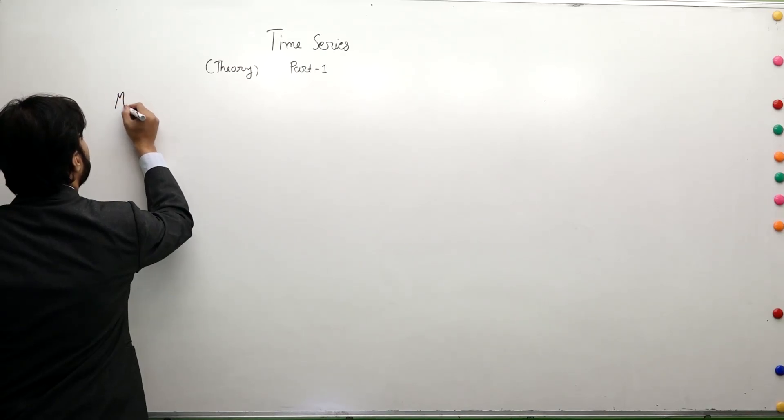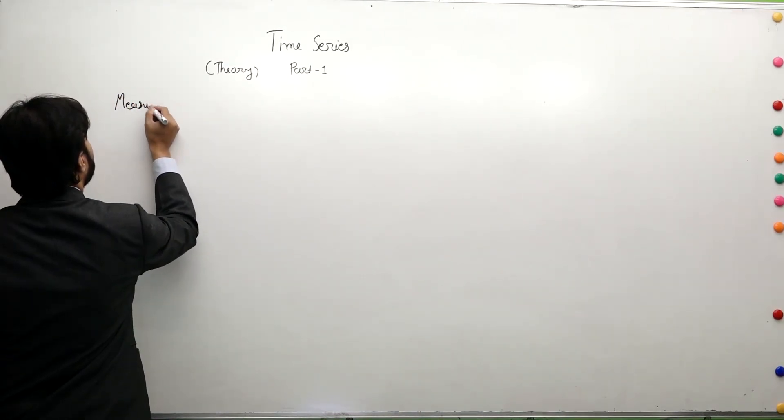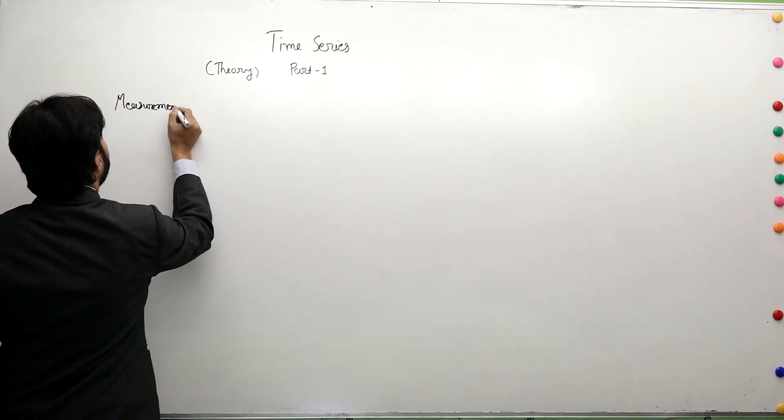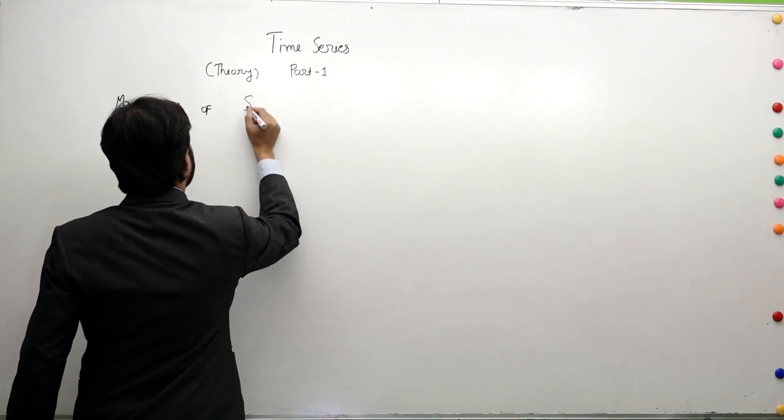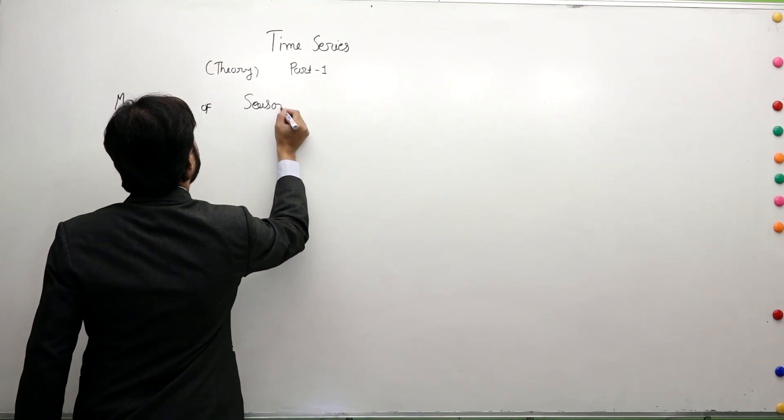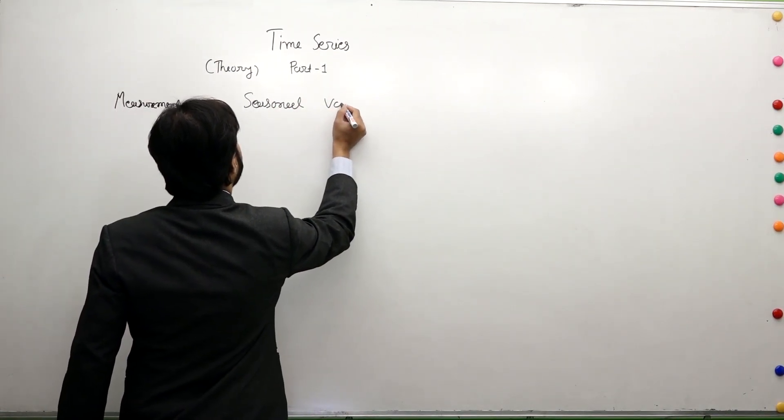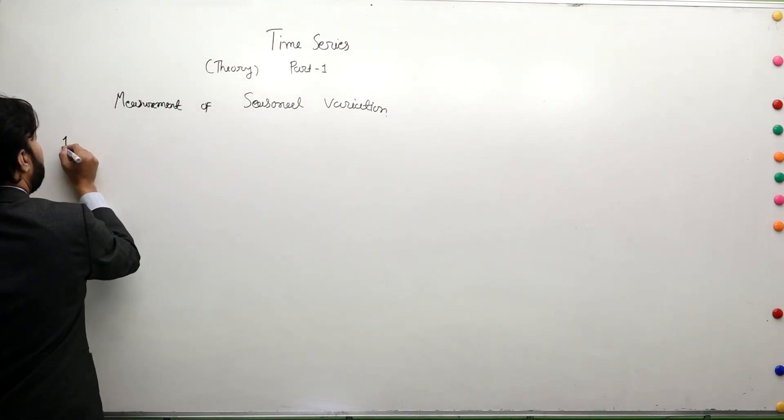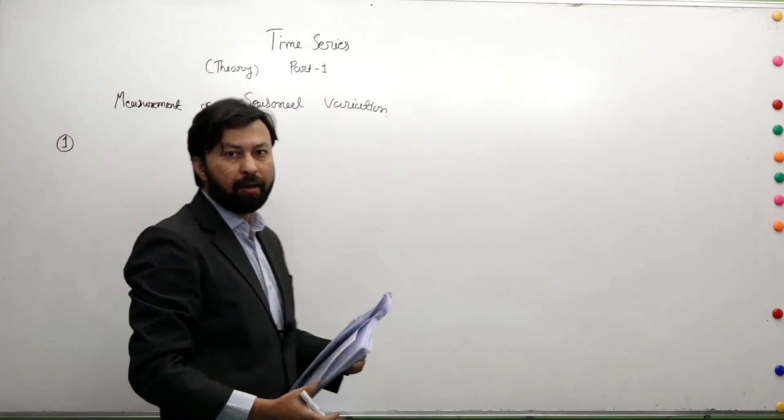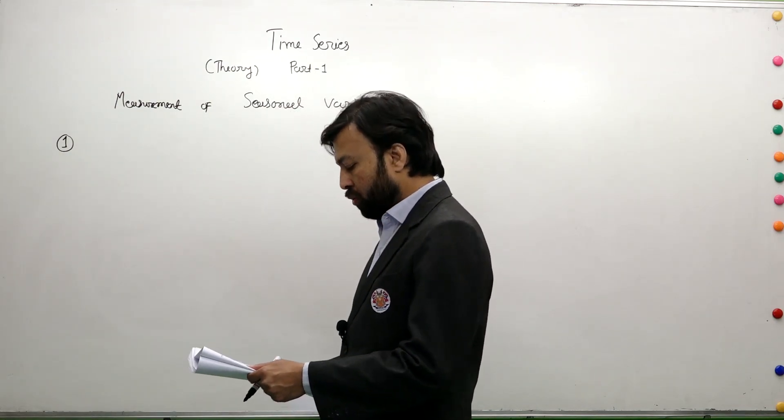Measurement of Seasonal Variation. There are four methods to find out the Seasonal Variation for smoothing.